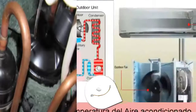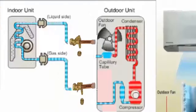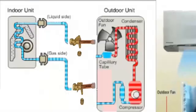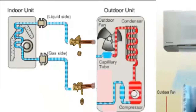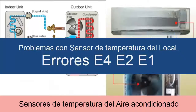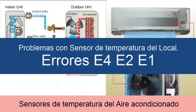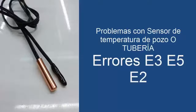Now let's see some fault codes associated with these sensors. 1. Fault codes associated with the Ambient Temperature Sensor are E4, E2, and E1. 2. Fault codes associated with the Evaporator Sensor are E3, E5, and E2.